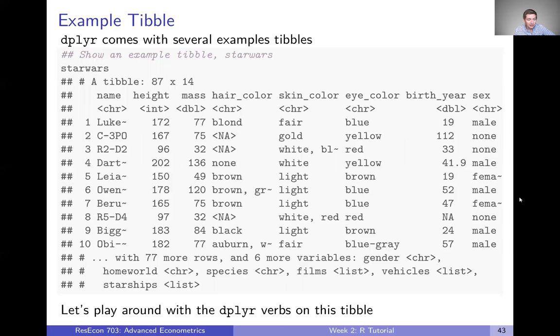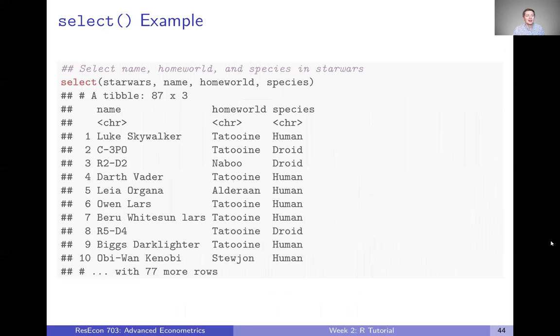So dplyr also comes with some example tibbles that we can use in our example manipulation here. In particular, there's this one called Star Wars, which lists a bunch of characters in the various Star Wars movies and other related media. We just type in Star Wars, it pulls up, it tells us it's a tibble that is 87 rows by 14 variables. It tells us as many variables as we have space for here, and then it tells us at the bottom we've got 77 more rows that it's not showing us and six more variables. I think this is really nice when you're just wanting to take a quick look at your data.